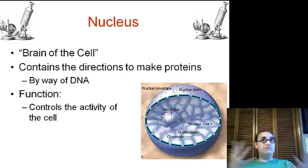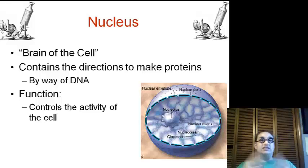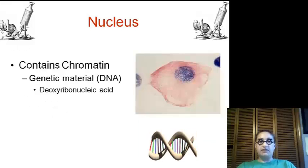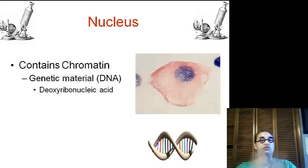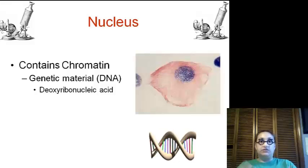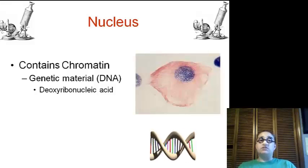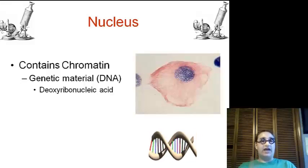Now, we have the nucleus in both plants and animals. This is the brain of the cell, contains the directions to make proteins by way of the DNA. The DNA is going to be your genetic material that tells and makes up your functions. It controls all portions of the cell. The nucleus contains the chromatin, which is our genetic material, which is known as DNA, which is going to be deoxyribose nucleic acid.